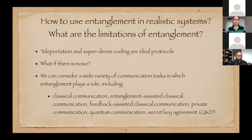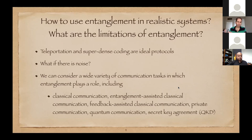The protocols we discussed — teleportation and dense coding — are ideal protocols, and we already asked what happens if there's noise. This leads to a wide variety of communication tasks: classical communication, entanglement-assisted classical communication generalizing superdense coding, feedback if the receiver is allowed to send feedback to the sender, private communication, secret key agreement related to QKD, and quantum communication, which is essential for a future quantum internet. One of the workshop organizers, Peter Rohde, has a recent book on the quantum internet where you can learn more.